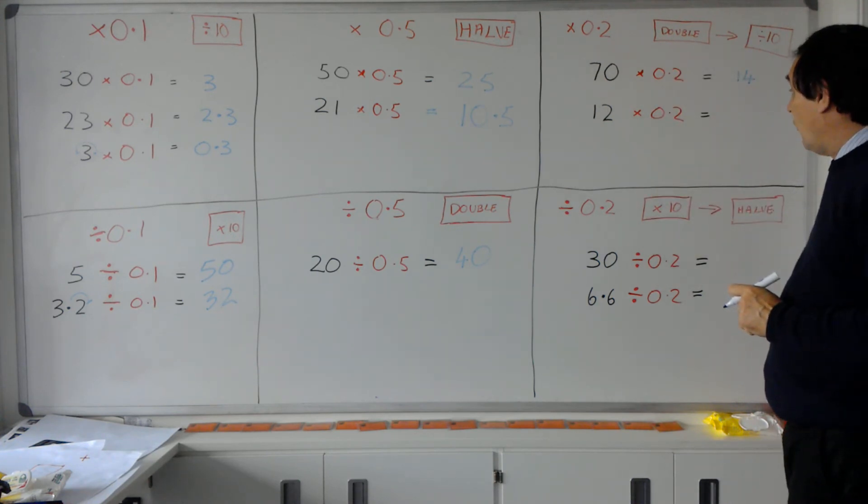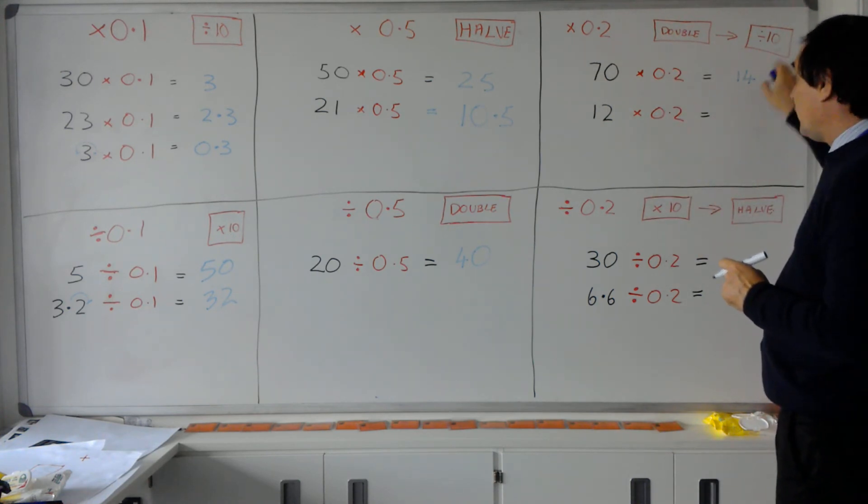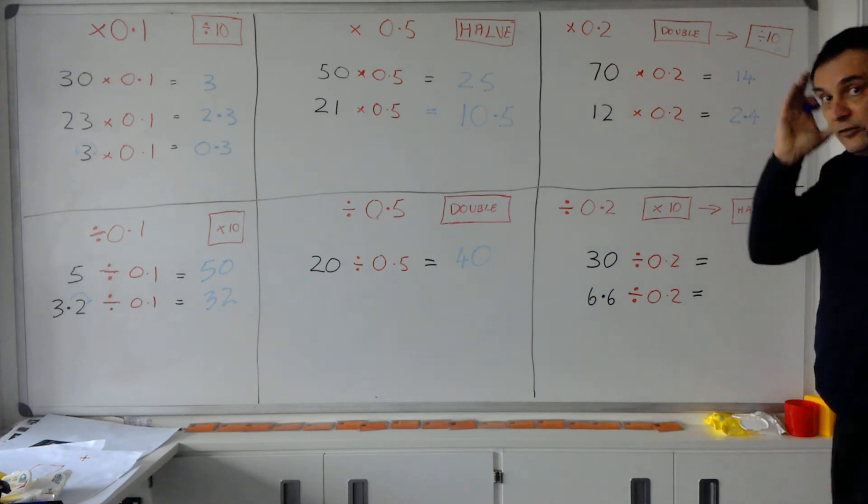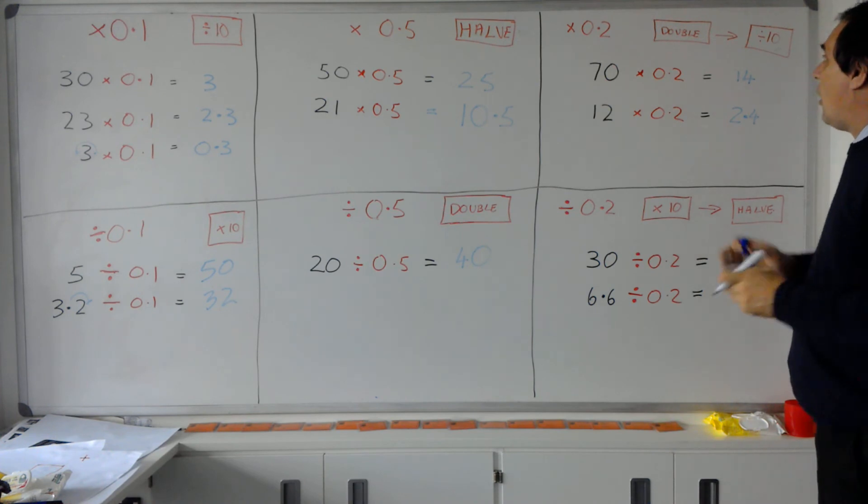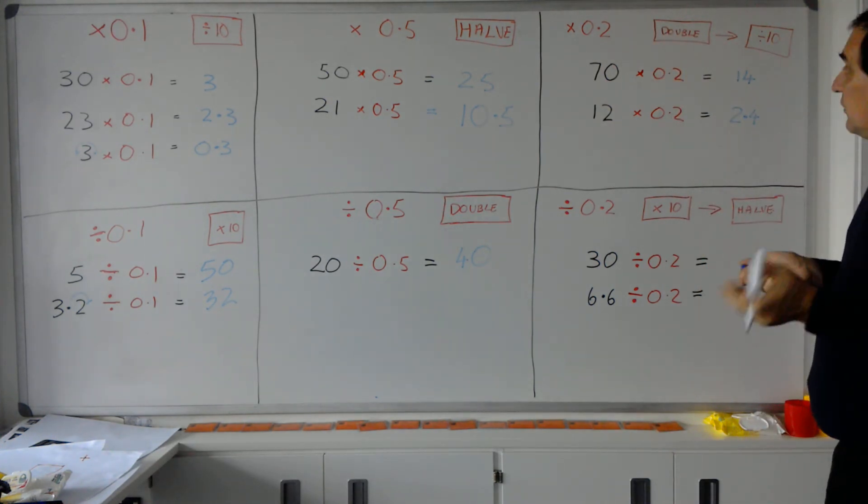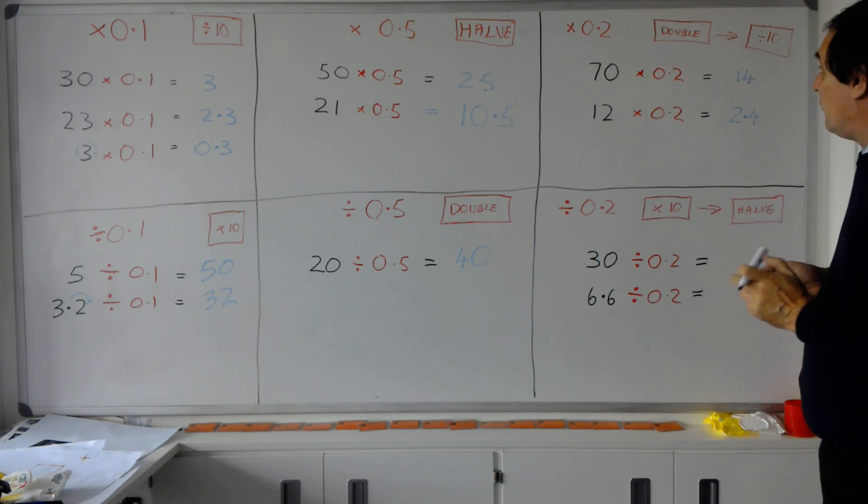Okay, so 12 times 0.2, remembering the two stages: double my 12 to give you 24, and then 24 divided by 10 gives me 2.4. So you've got to think of two stages. Remember, melting together it means times by 0.2 is the same thing as divided by 5, but use this method as a two-stage measure to break up the sum.